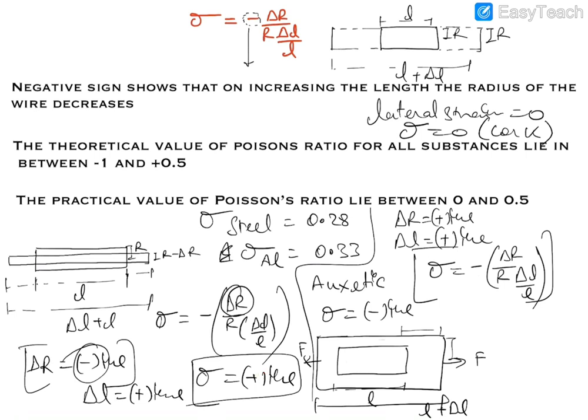To summarize: Poisson's ratio is negative for honeycomb and auxetic materials, zero for cork, and positive for normal materials like steel and aluminium. This was the discussion on Poisson's ratio, and we will be discussing more detailed facts in the next videos. Thank you.